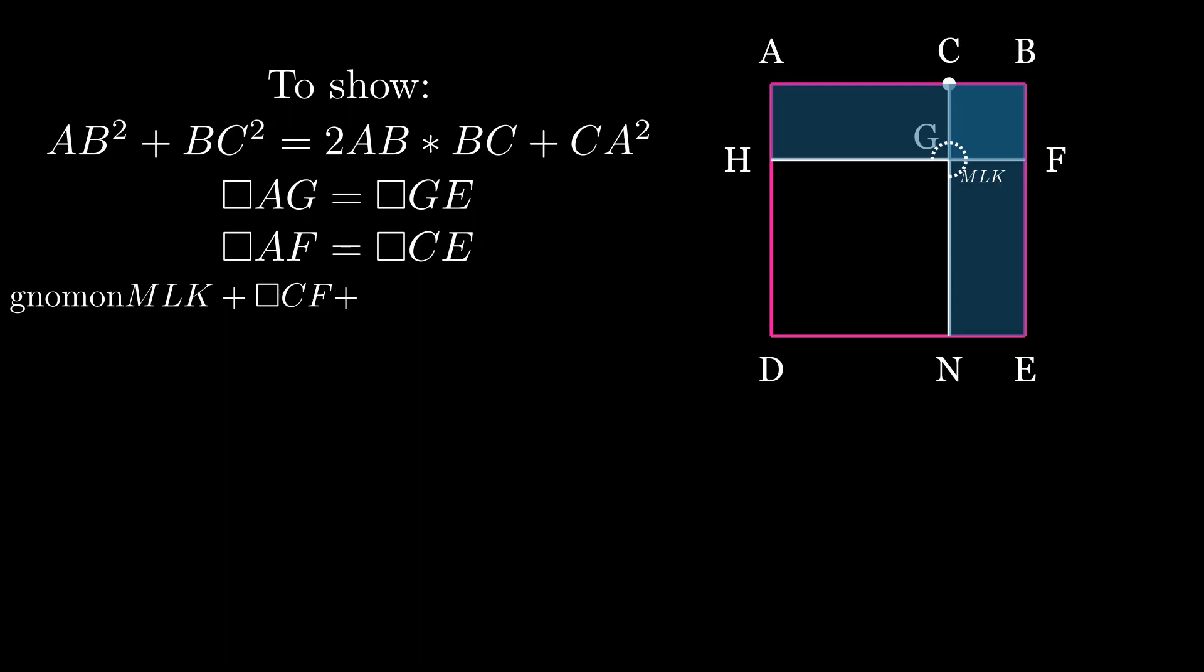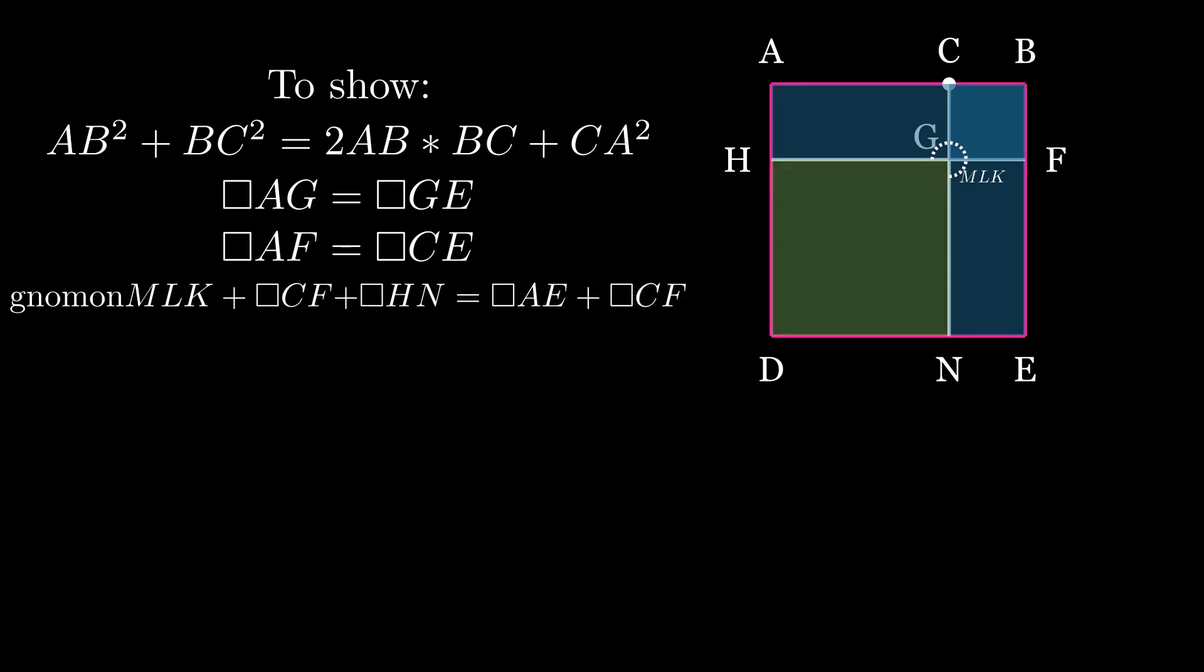If we add the square on AC, which is AN, to both of these, we find that the square on AB plus the square on CB is equal to 2 times AF plus HN, which is the square on AC.